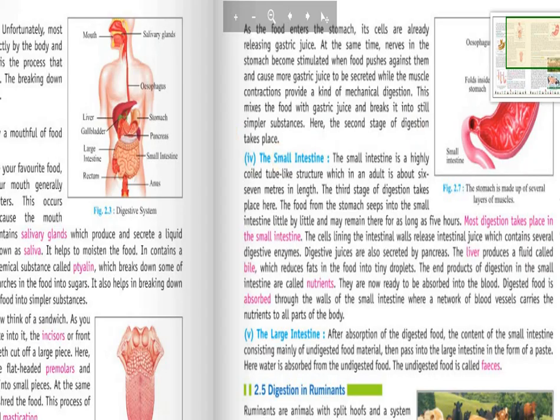So as the food enters the stomach, the cells are already releasing gastric juice. And gastric juice means here hydrochloric acid which is highly corrosive in nature and anything comes in contact with it, it corrodes into pieces or very simpler substances. So same here, the food falls in the stomach, the muscle parts under the food get contracted and more gastric juice is released. And this juice mixes with the food and breaks it into simpler forms. And from here, the second stage of digestion takes place.